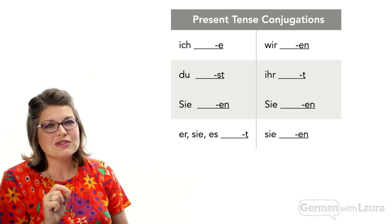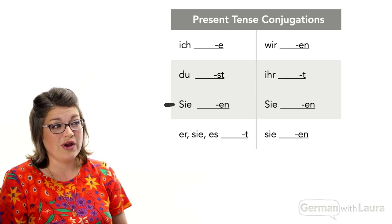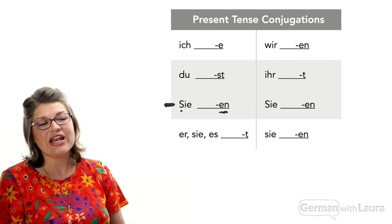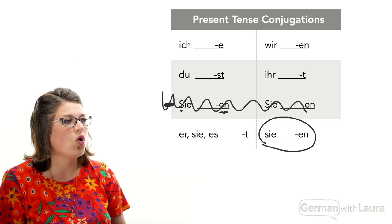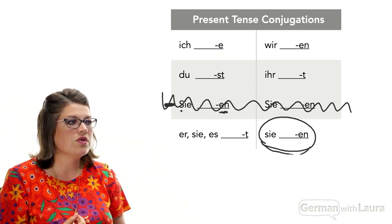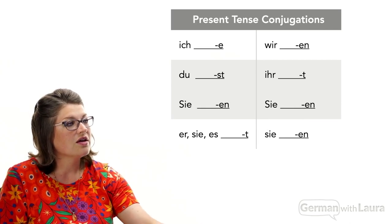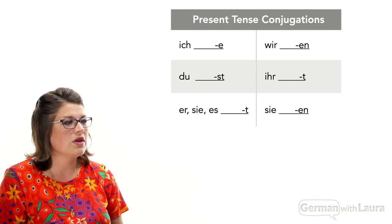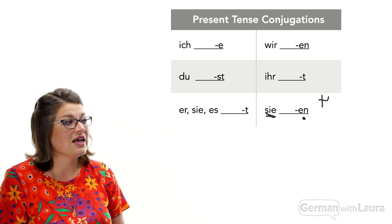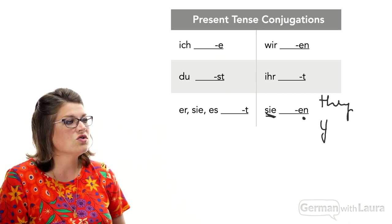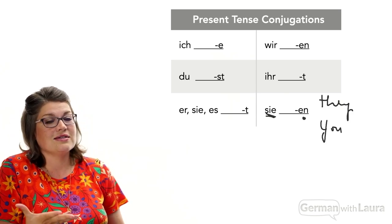We can simplify this table: since the formal capitalized Sie uses the -en conjugation just like lowercase sie (they), we can remove that whole line knowing it's identical. All we have to do is remember to capitalize the Sie if we're using it as the formal you. So the simplified table has just the remaining lines — the formal Sie takes the exact same conjugation as they.